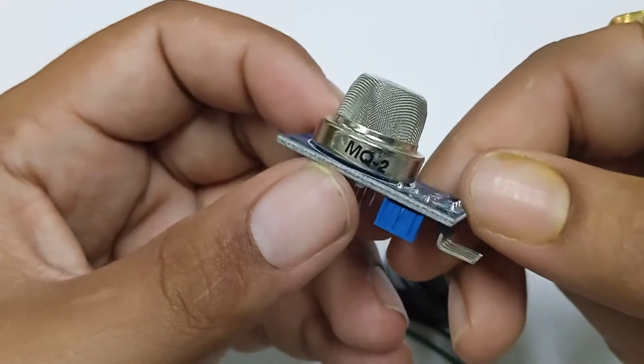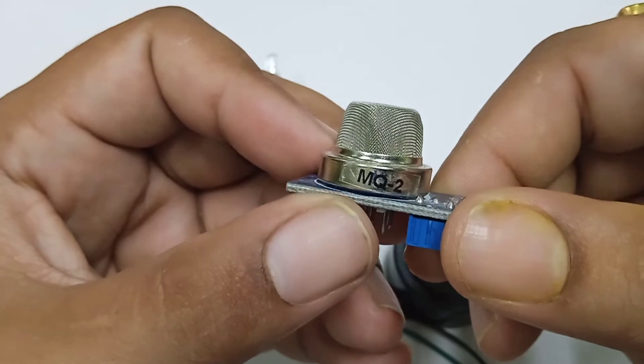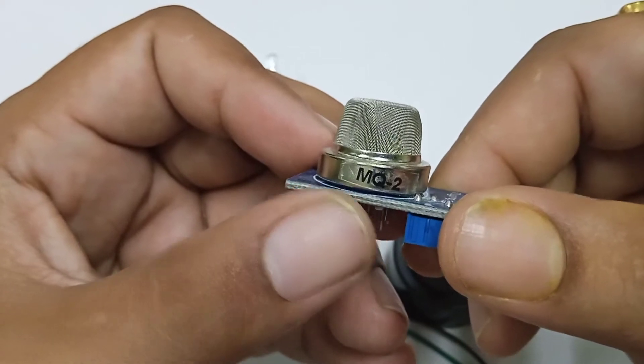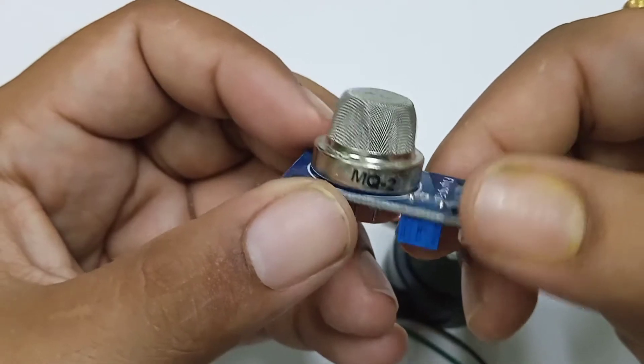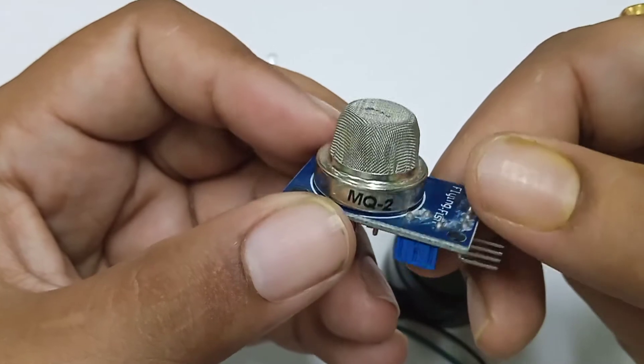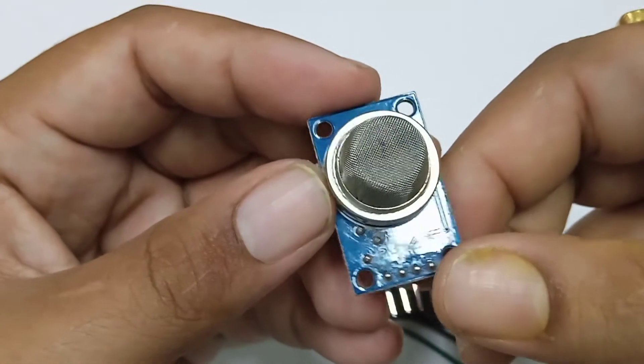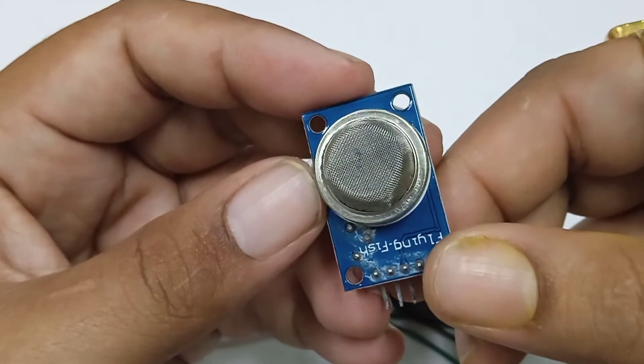Today I have one MQ2 sensor. This is basically a SnO2 based gas sensor or semiconductor gas sensor. This sensor is sensitive to basically methane, LPG, and smoke. Though this gas sensor has very poor selectivity, it can sense other gases also.